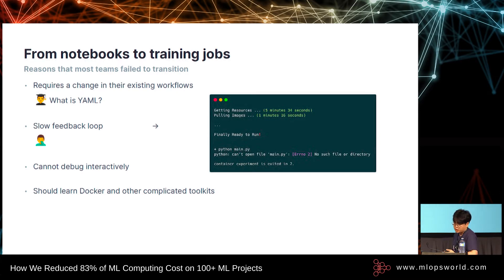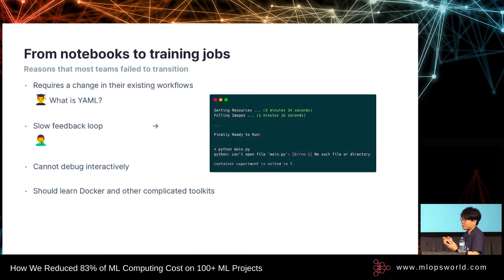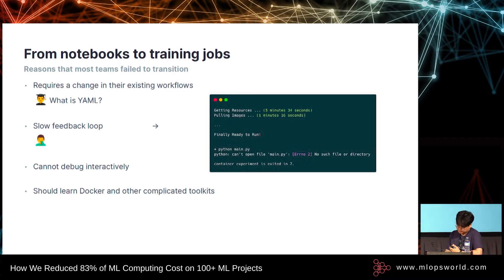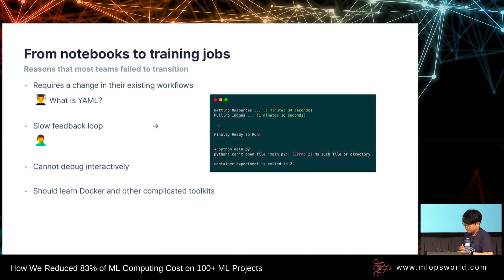One of the major problems is the slow feedback loop. After you create a training job, you have to wait a while — first getting some resources for five minutes, then pulling images for one minute. And then you face an error like 'Python main.py: can't open file main.py, no such file.' So then you have to edit some settings, wait a long time, and if there's another error... it cannot be a regular workflow. This is the second reason most teams fail to transition.